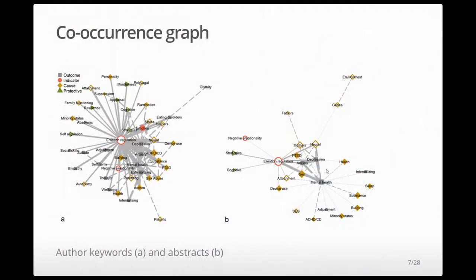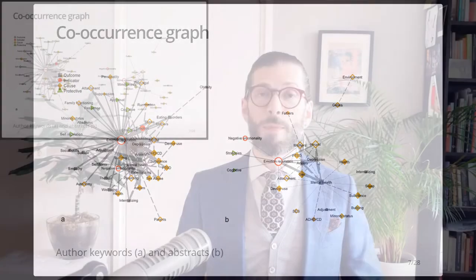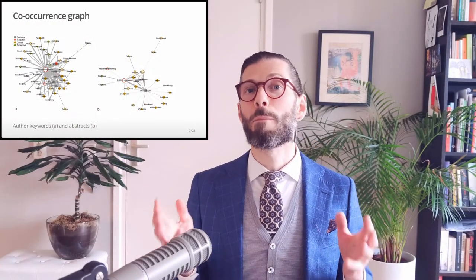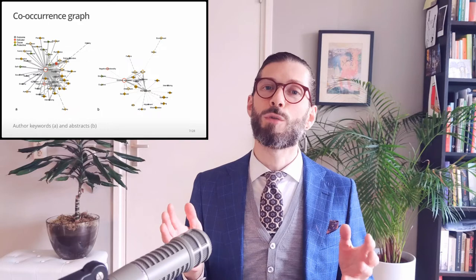On the left, we see a network connecting important constructs mentioned in the author keywords of these papers. And on the right, we see a network of phenomena that were identified in the abstracts of those papers. Now, if you freeze frame and have a look at these results, you may recognize some of the phenomena that you are interested in in your own research. I find the results very relatable. So now we have some idea of the broad range of phenomena that might be relevant for adolescents' emotion regulation.